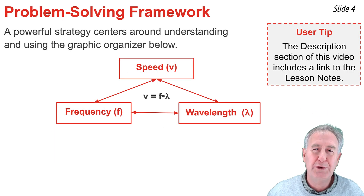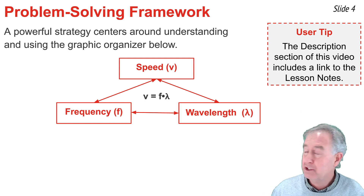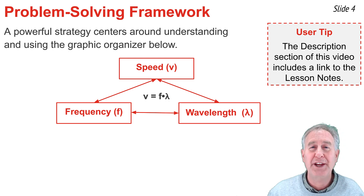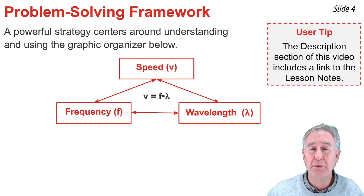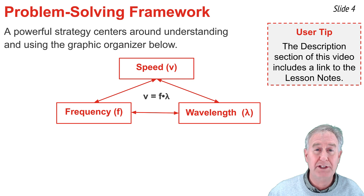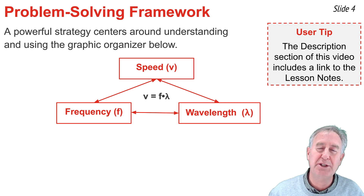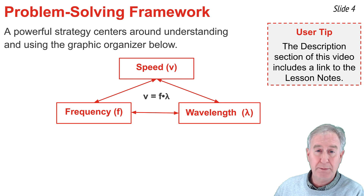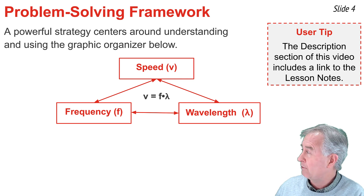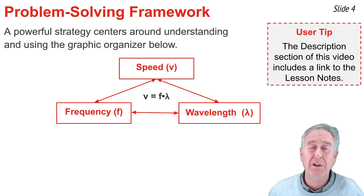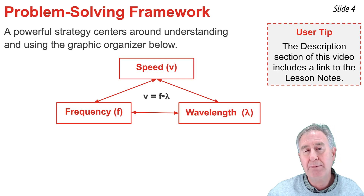I recommend a problem-solving strategy centered around a graphic organizer. In the graphic, quantities to solve for — like frequency, wavelength, and speed — are in a box with their symbol in parentheses. Formulas relating these quantities appear in black, such as v = f × λ for the relationship between speed, frequency, and wavelength.